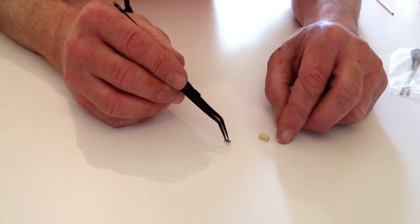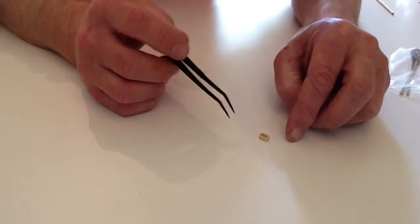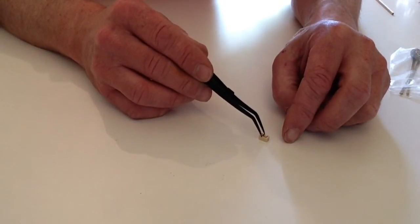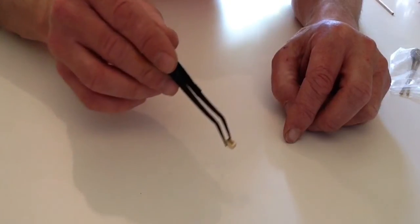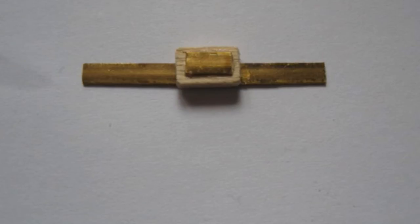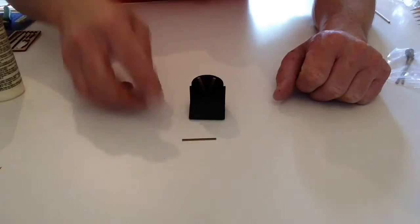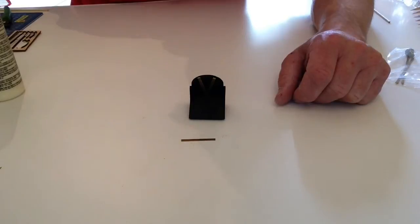Glue that into position and then we'll come back to the next part. Now take your brass strip that you had before and the remaining part that you had, cut it to the length so that it will sit nicely in there like so.